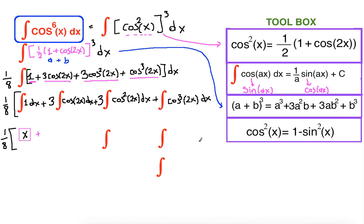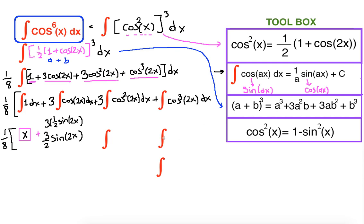We have plus sign, so let's check the second integral. We have three in front. The anti-derivative of cosine of 2x — using the cosine of ax kind of argument — will be one half sine of 2x. Multiplying by 3, it will be 3 over 2 sine of 2x. Our second integral is also done, so let's box it as well.